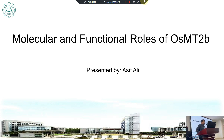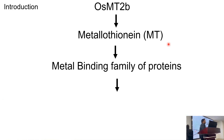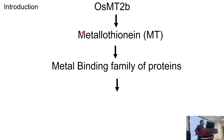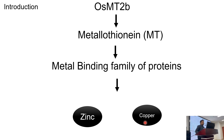Welcome to today's session. In this video and presentation I will be talking about the molecular and functional role of OSMT2B. OSMT2B belongs to a family of metallothioneins — 'metallo' is extracted from metal — so it means this belongs to the family of metal binding proteins. All of those metal binding proteins are directly or indirectly connected with metals like zinc and copper, as well as manganese and cobalt.